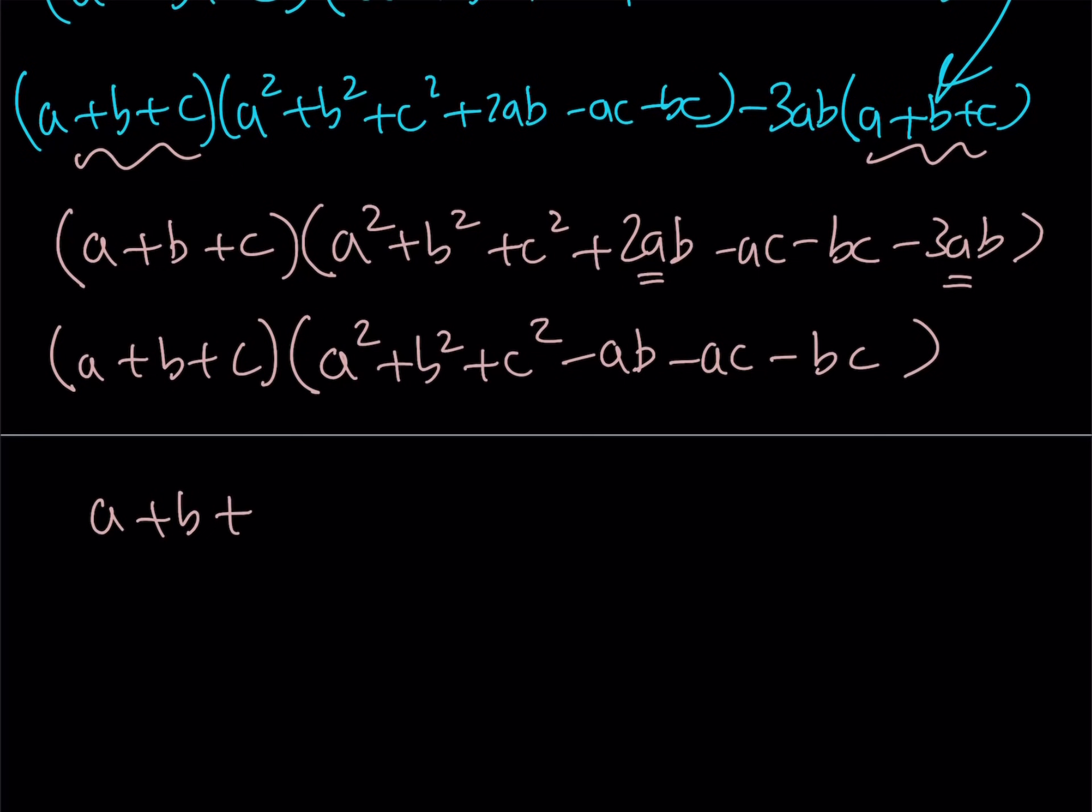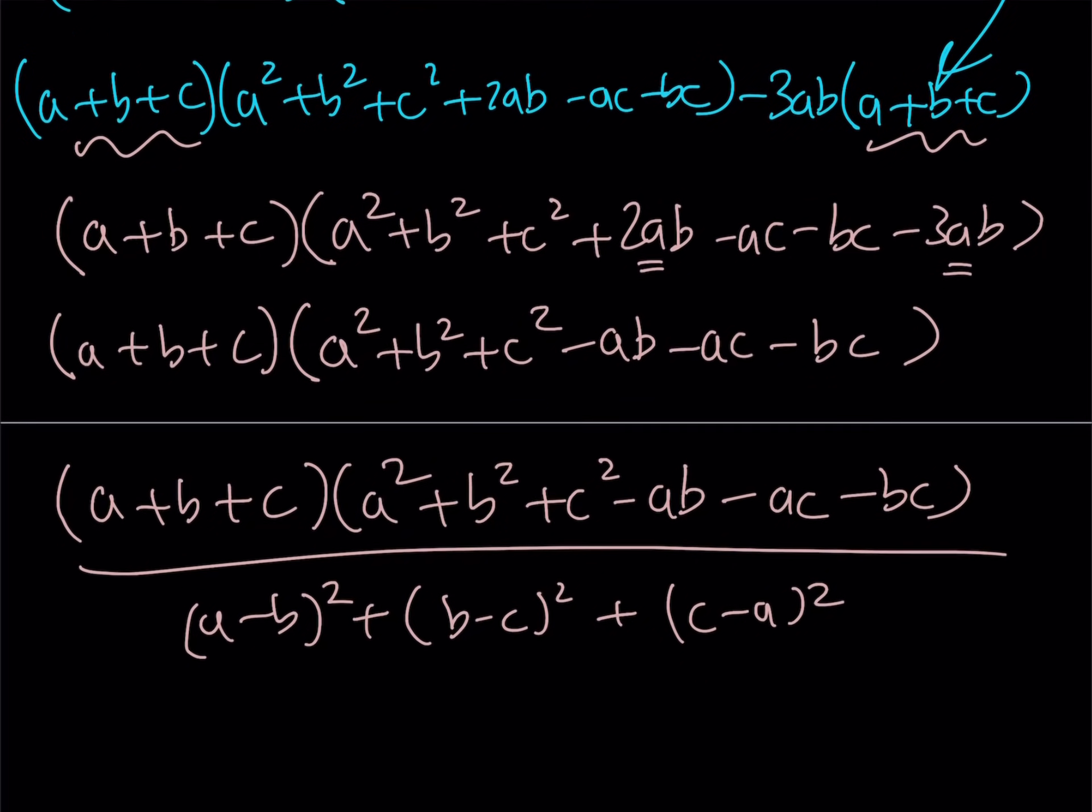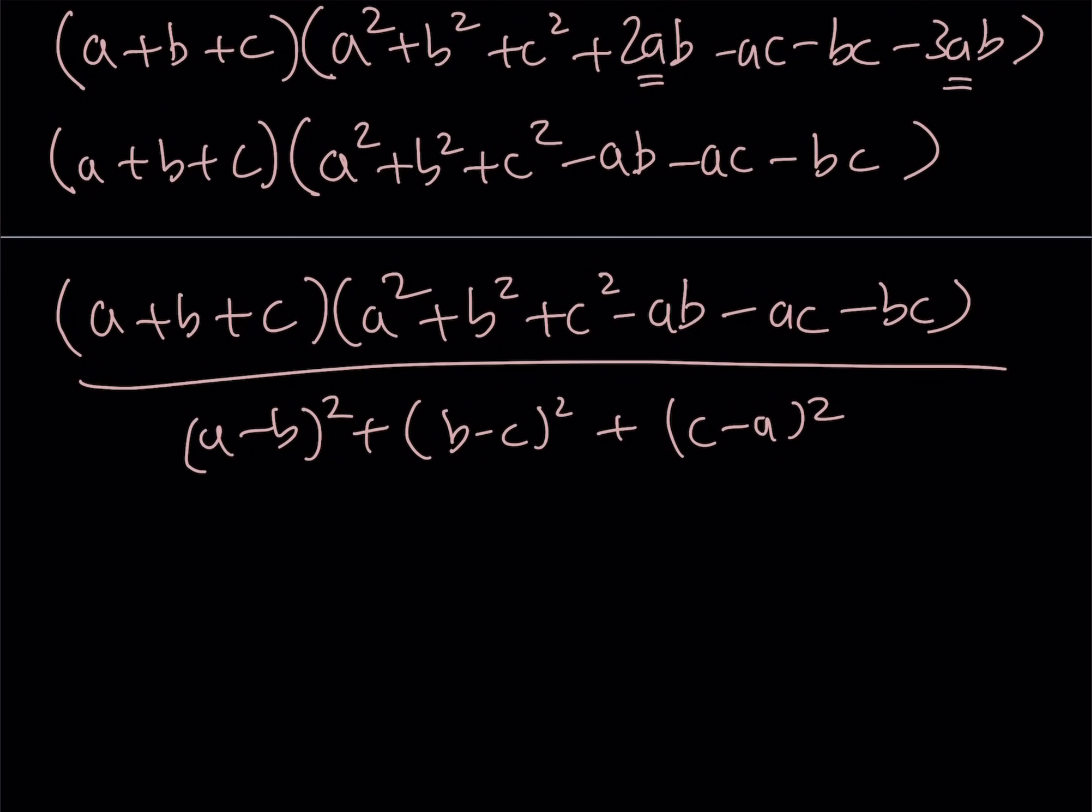And then, the denominator is going to be a minus b quantity squared plus b minus c quantity squared plus c minus a quantity squared. It doesn't have to be that order, but they all have to be kind of different. Now, notice that as is, I can't really simplify anything, so I kind of have to expand the bottom now. Let's do that right now.